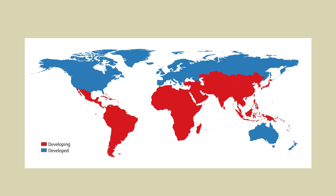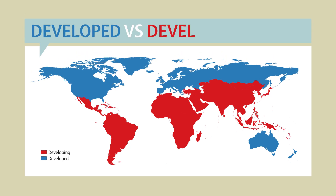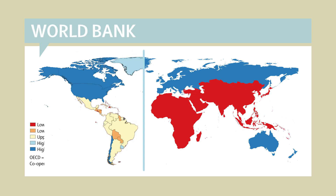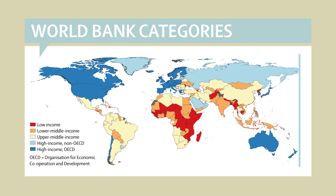Scientists have been trying to move away from labeling countries as developed or developing, and World Bank categories give a picture of development limited to income.